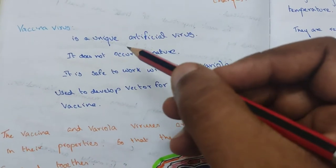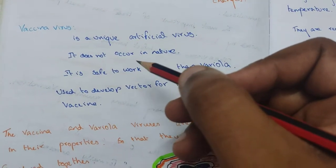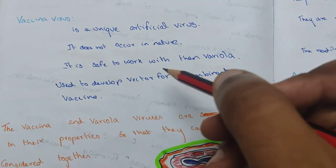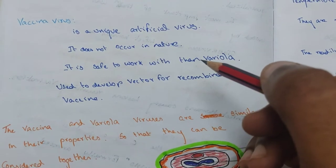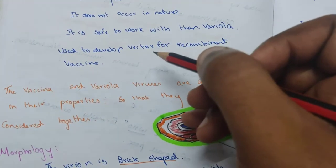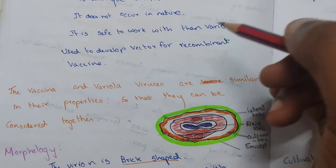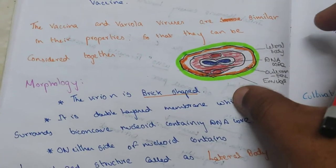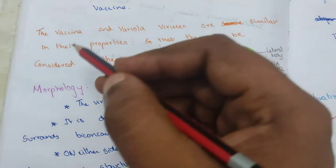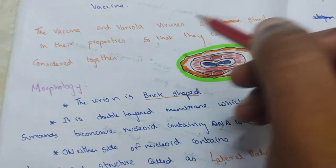Vaccinia virus is a unique artificial virus — it does not occur in nature and is safe to work with. It is used to develop vectors for recombinant vaccines. Vaccinia and variola virus are similar in their properties, so they can be considered together.